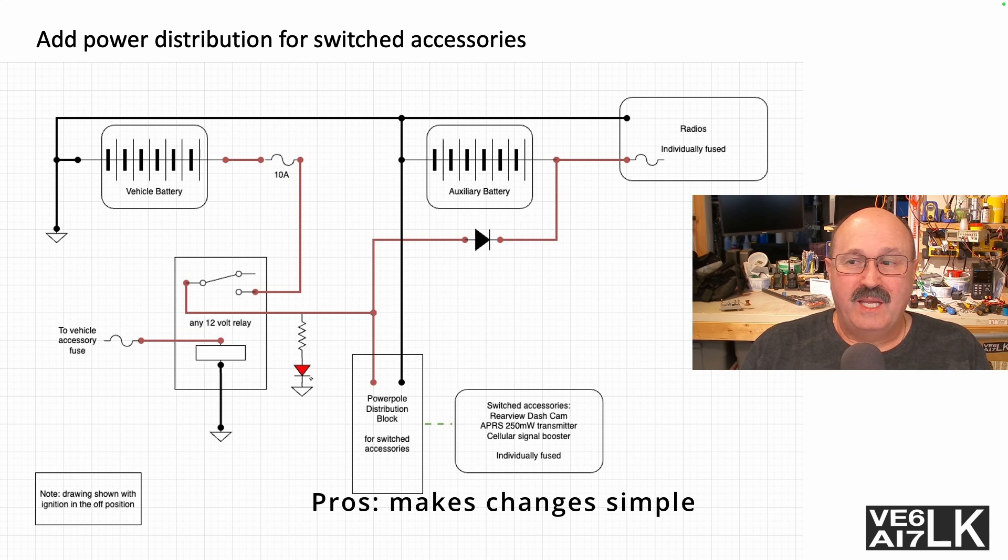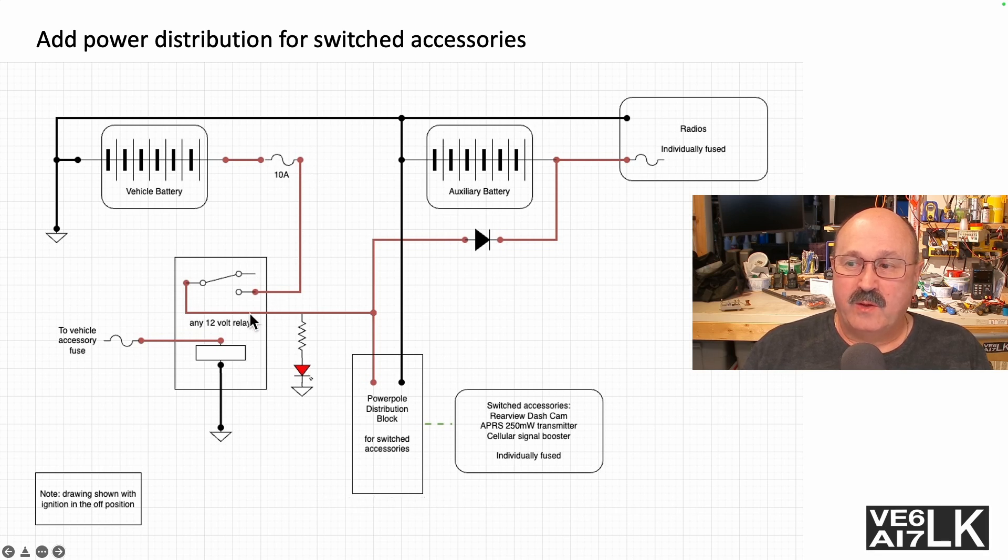So now what I've got going on is I have a vehicle battery and a simple 10-amp fuse that is ready to deliver current. When this relay is closed, it turns the LED on, it runs the current down to the battery which powers my radios.